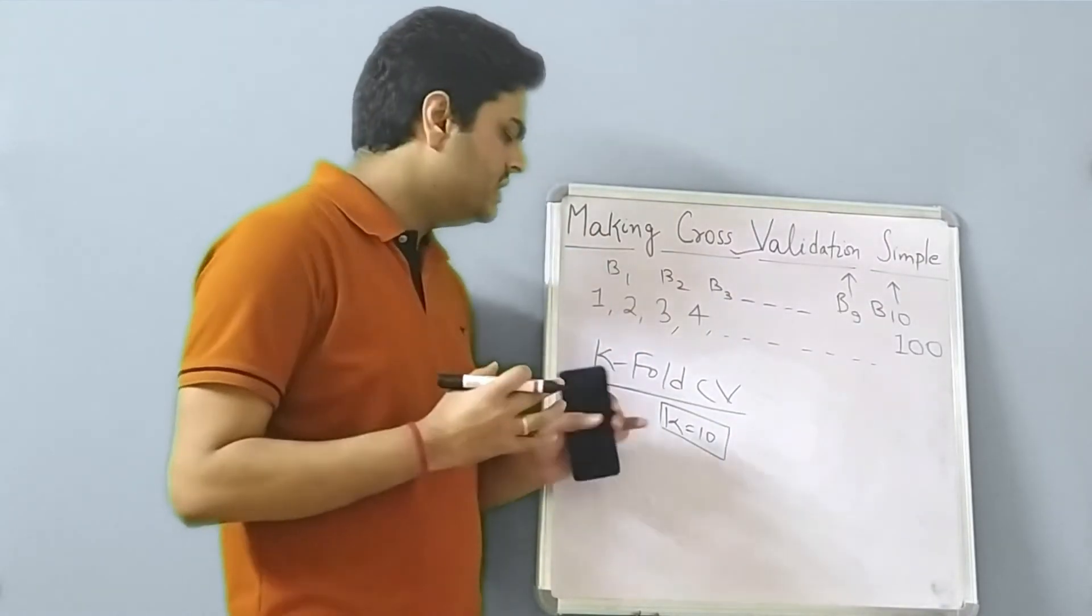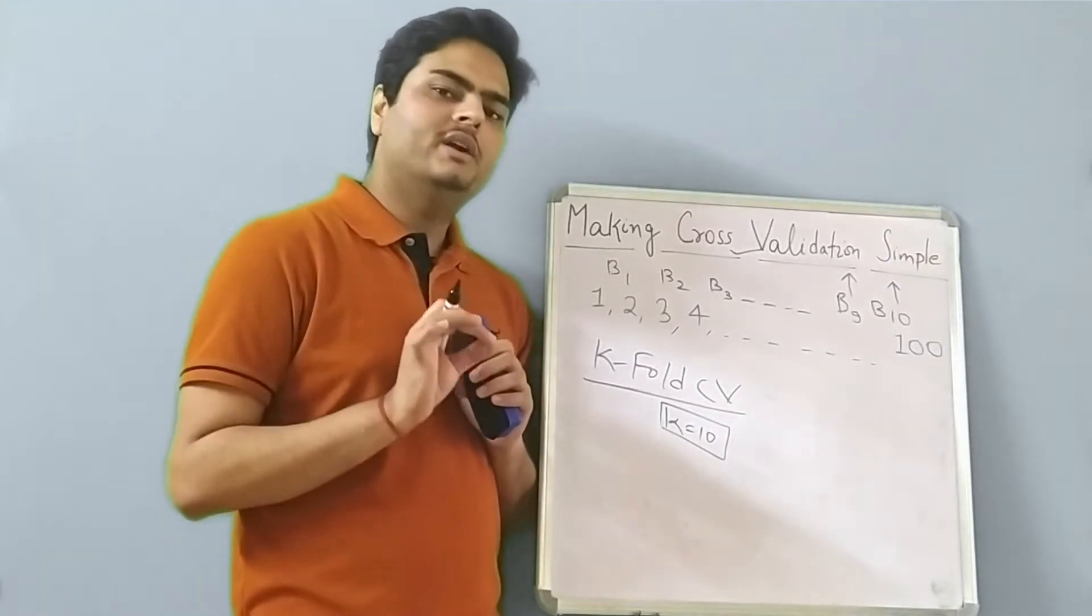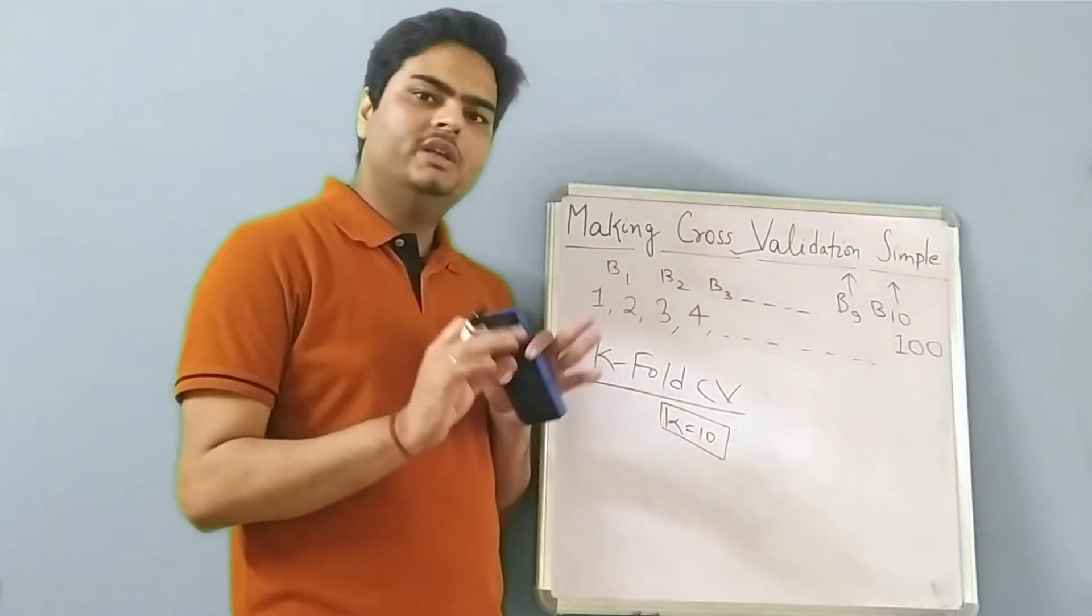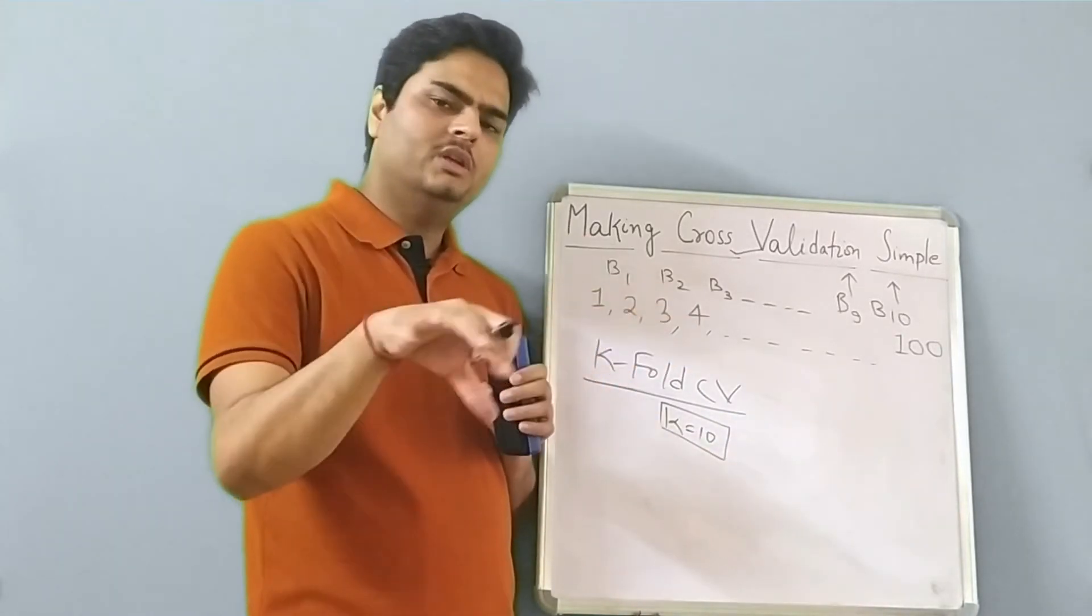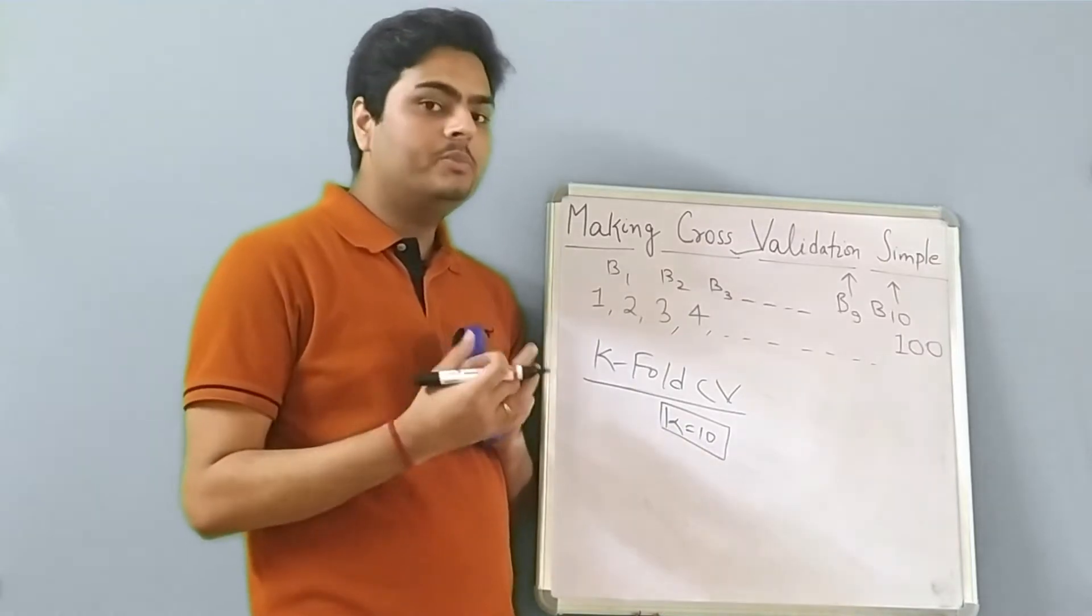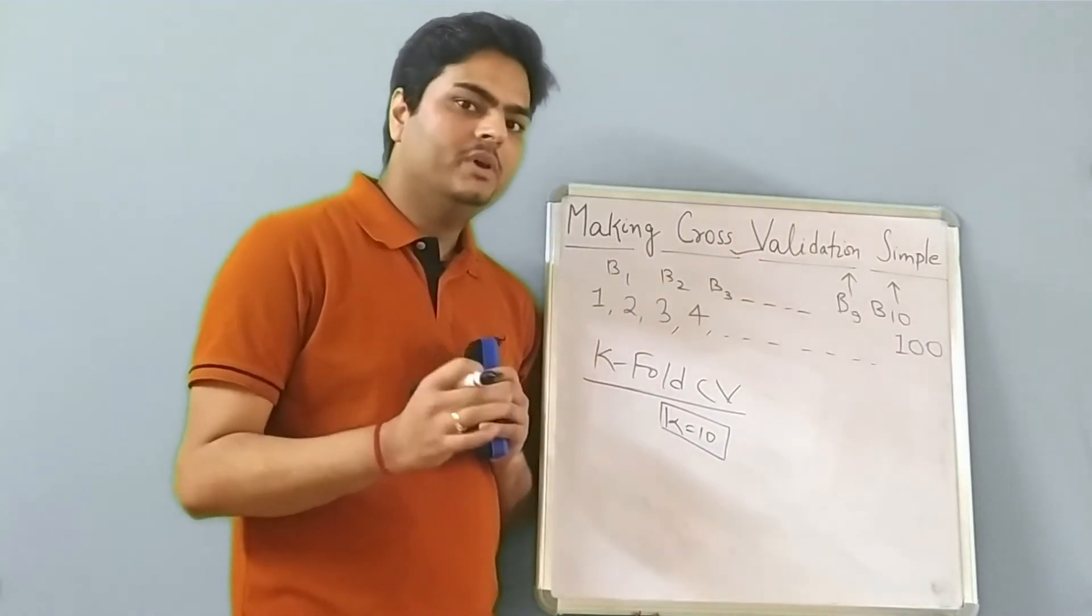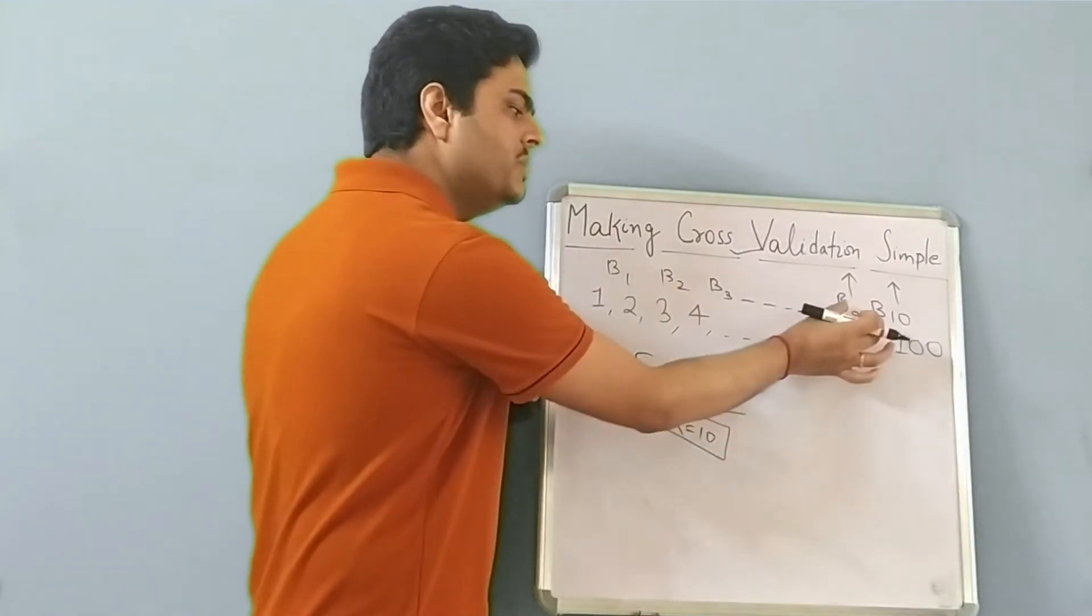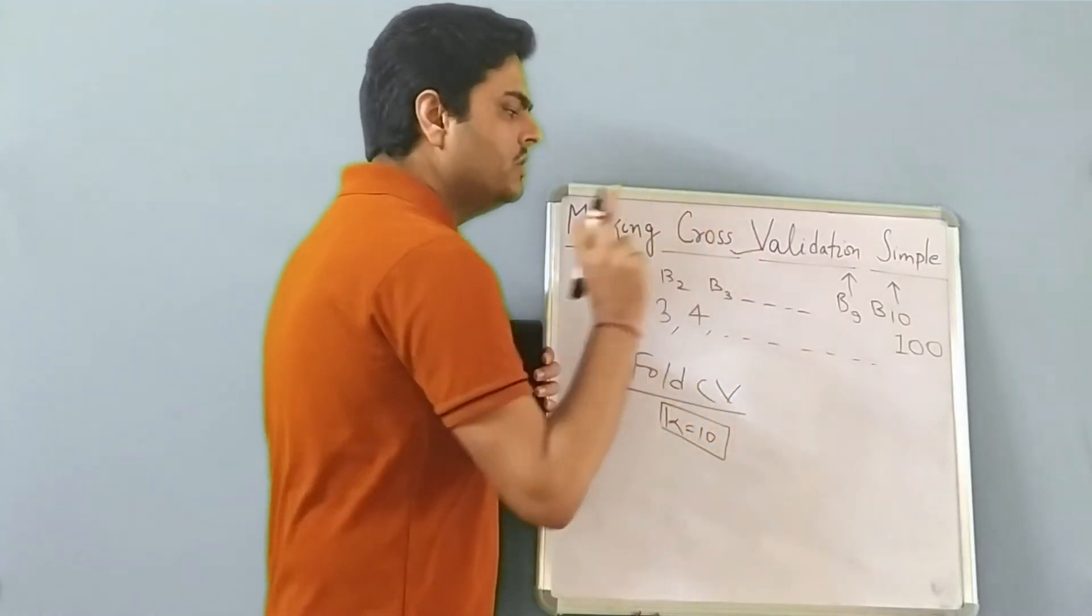What is the advantage here? There are two advantages from the previous LOOCV approach. First advantage is model is using all the data that is for sure because all the data is becoming part of the training at some or other point of time. The next approach is model will not suffer the high variance problem because first of all, the size of these buckets is more. In previous case, the size was only one record. Here the size is 10 records.